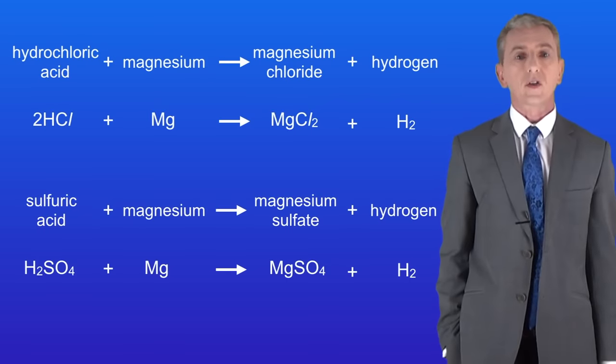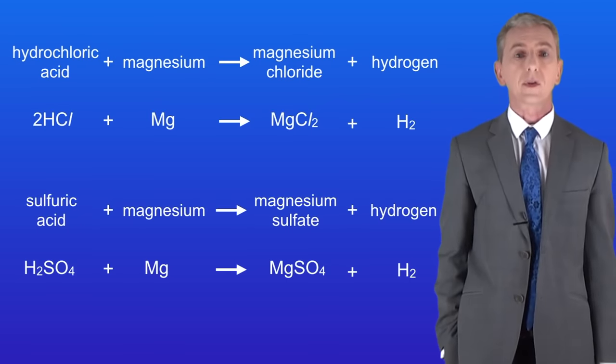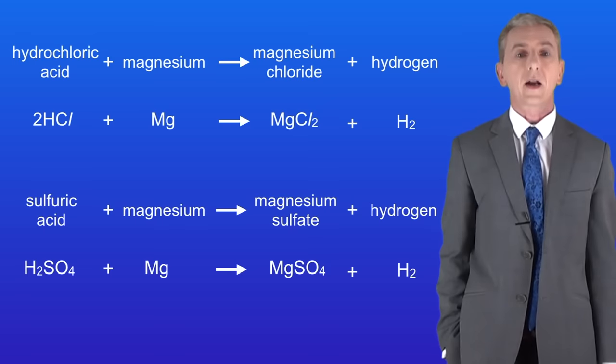So if we now look at the symbol equations for these reactions we can see the magnesium displacing the hydrogen from the acids and making hydrogen gas.